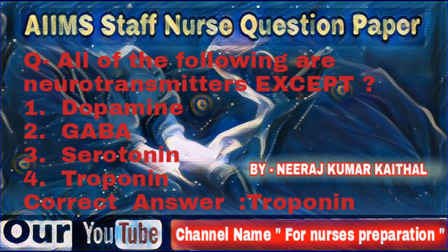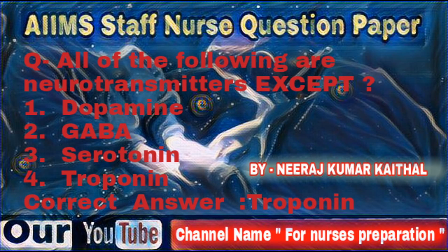Question: All of the following are neurotransmitters EXCEPT — Dopamine, GABA, Serotonin, Troponin. Correct answer is Troponin. Neurotransmitters, also known as chemical messengers, are endogenous chemicals that enable neurotransmission, transmitting signals across the chemical synapse from one neuron to another target neuron, muscle cell or gland cell. Certain subtypes of troponin — cardiac I and T — are sensitive and specific indicators of heart muscle damage, measured to differentiate unstable angina from myocardial infarction in people with chest pain.